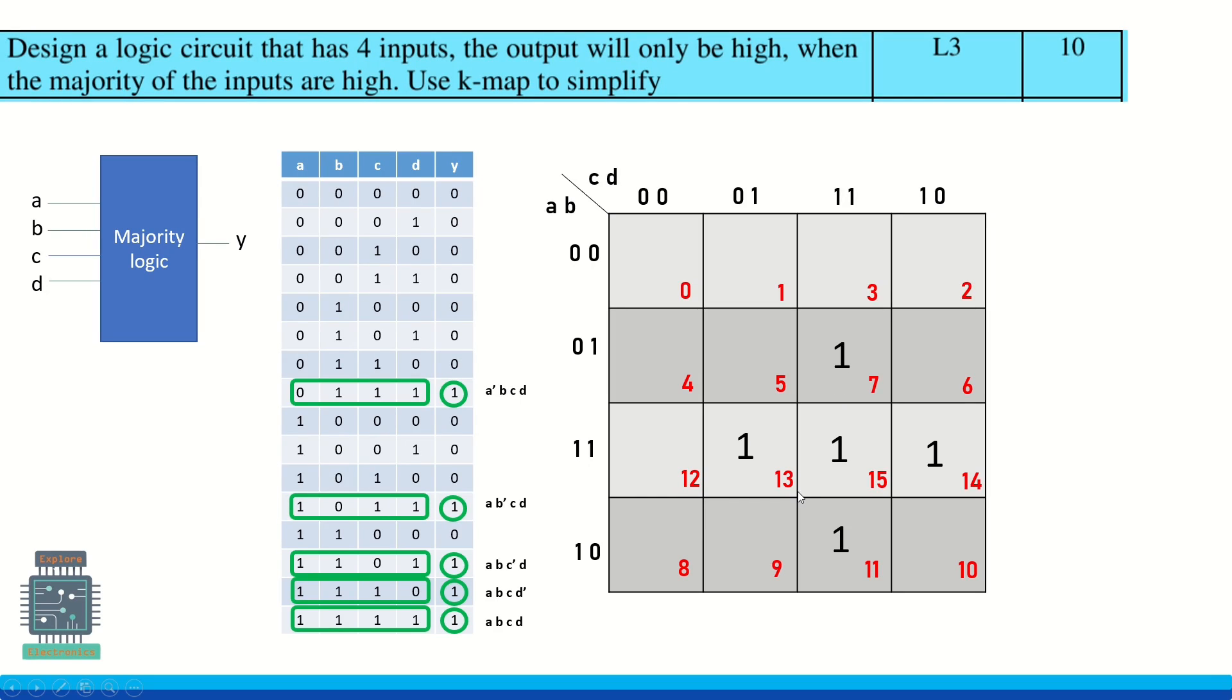Now let us group these. First we can group these two as one group, and we have adjacent one over here. We can cover this one more group, and we can group this again, and we can group this again. No four variables are adjacent here, so we will be having two variable groups.